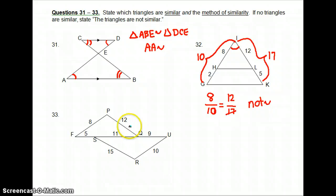33. We've got two triangles that are right next to each other, so let's split them up. Make it easier to see. Okay, this is triangle PFQ, and this would be 8, and this would be 12. The bottom's going to be both of these, 5 plus 11, which is 16.